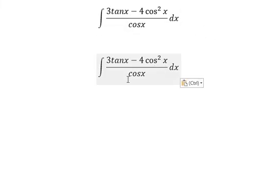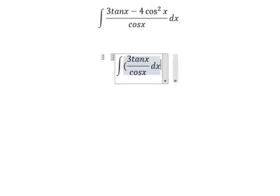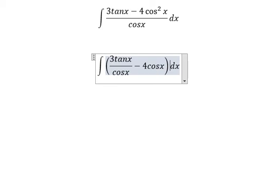We have the integral of (3tanx - 4cos²x)/cosx dx. We can split this as 3tanx/cosx - 4cos²x/cosx. Simplifying, we have 3tanx/cosx minus 4cosx. The integration of cosx we have sin x.